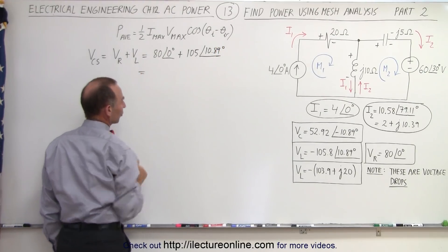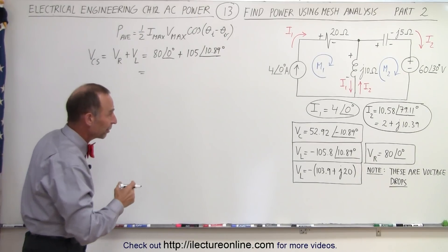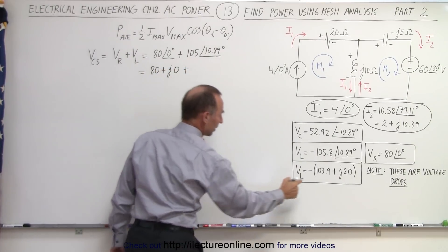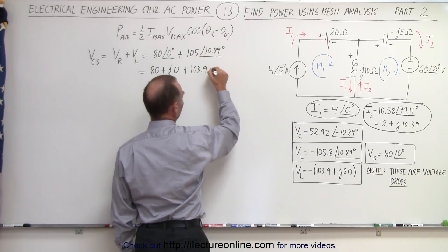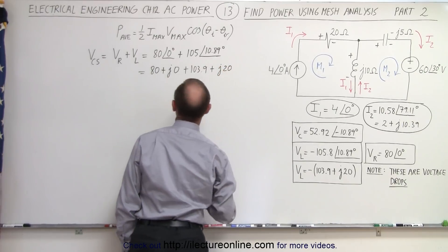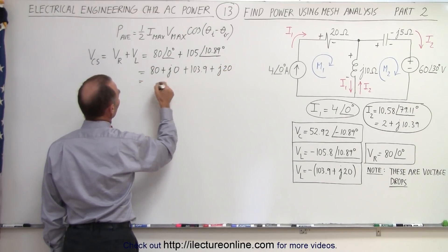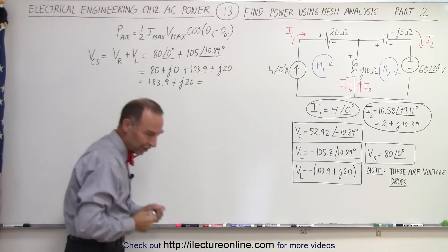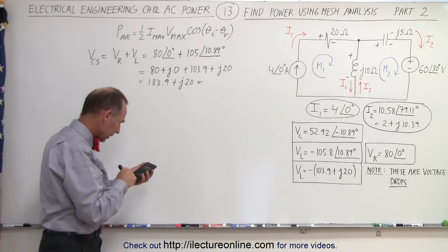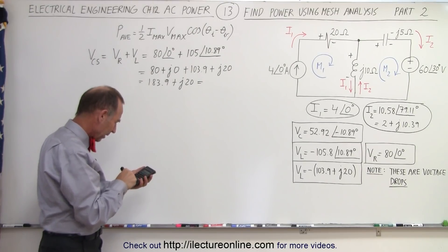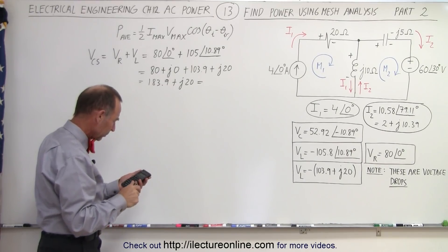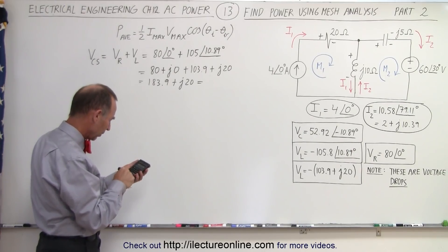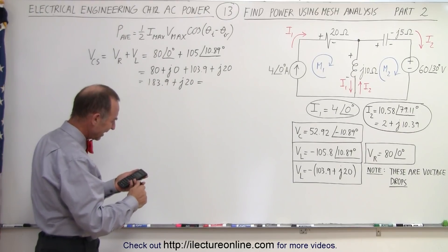When we add those two voltages together, we should first write them in real and imaginary part format. That would be 80 + j0, plus 103.9 + j20. So when we add all that together, this equals 183.9 + j20. To convert to magnitude and phase angle format, we take 183.9 squared plus 400 and take the square root — let me redo that: 183.9 squared plus 400, square root, gives 184.98.